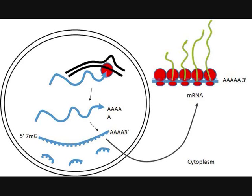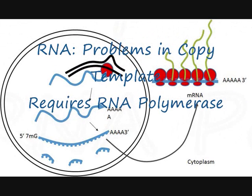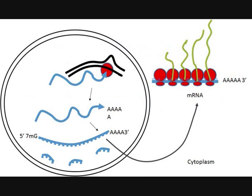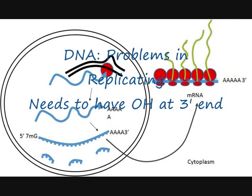These steps may vary slightly in RNA and DNA viruses. RNA viruses have problems using their RNA genome as a copy template, and thus require the help of RNA polymerase to copy the RNA genome into host DNA. As for DNA viruses, they encounter problems in replicating.